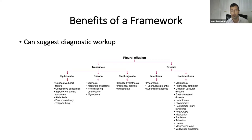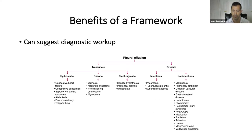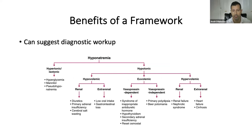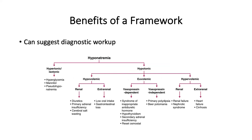The other benefit to the framework system is it can suggest a diagnostic workup. Here's the same framework for systemic vasculitis — the small vessel arm is subdivided into ANCA-positive and ANCA-negative, so it automatically tells you what serologic study to think about ordering. The same is true for pleural effusion, which subdivides into transudate versus exudate based on Light's criteria, automatically telling you to perform a thoracentesis and send fluid for LDH and protein. And for hyponatremia, where the hypotonic arm subdivides by volume status, making you pay close attention to volume on exam.